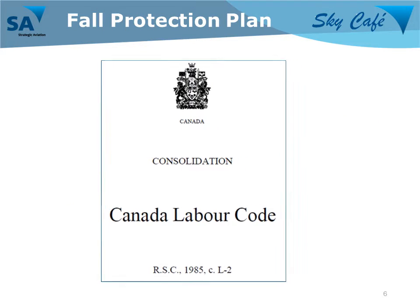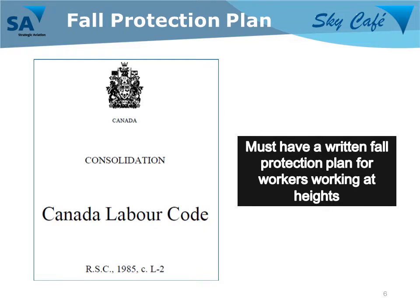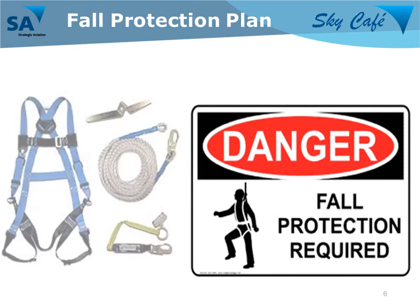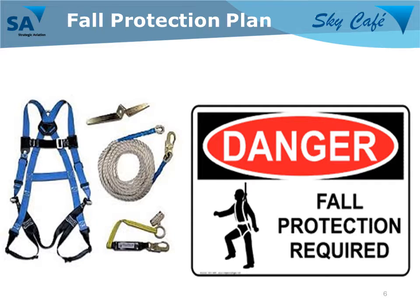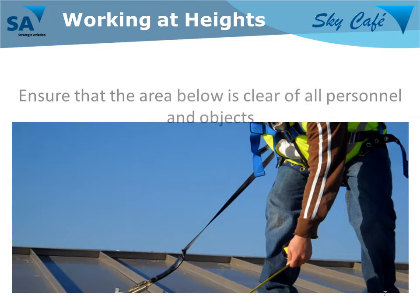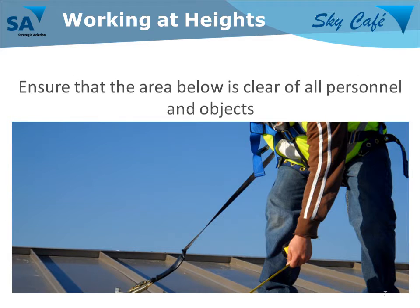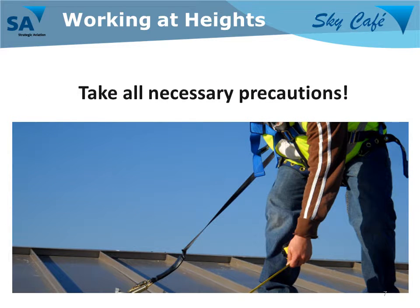One of the requirements of the Canada Labour Code is to have a written fall protection plan for workers working at heights. When de-icing, you will need to follow these procedures and use all fall protection and fall arrest equipment, such as a safety harness and lanyard. It is important that this equipment is inspected prior to every use, to ensure that it is in good condition to protect you. When working at heights, it is also important that you ensure that the area below you is clear of all personnel and objects. Taking all necessary precautions is exercising your right to participate in safe work.